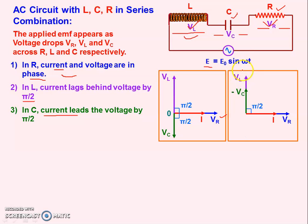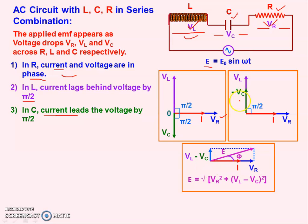To solve: VL and VC are in opposite directions, so we combine them as (VL - VC) in the upward direction. Now we have two perpendicular vectors: (VL - VC) and VR. Their resultant gives E. Since the angle between them is 90 degrees, using Pythagoras: E = √(VR² + (VL - VC)²). This is the resultant alternating EMF.